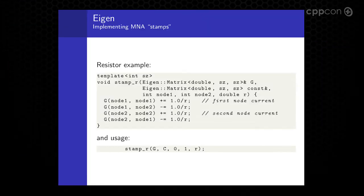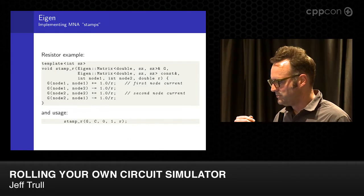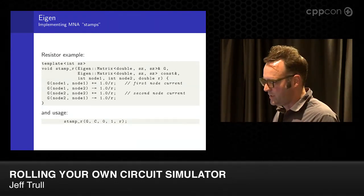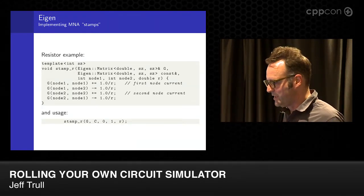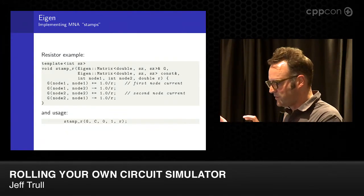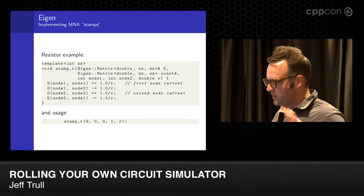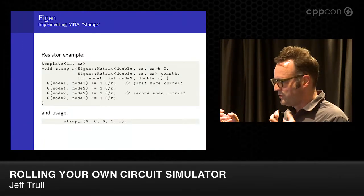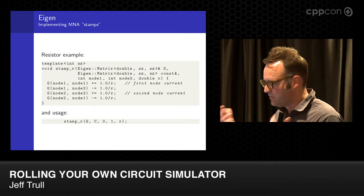Here's an example of the stamp — the conventional way of representing a component — using the resistor as an example. This is a way where, if you're reading in from the user or some file, all the different resistors and other components can simply call this function. As long as we have the matrix of the right size, we'll end up with all the matrices we need to represent the system.